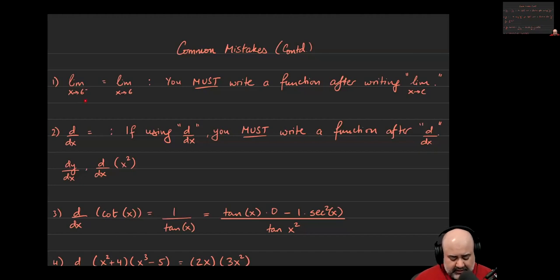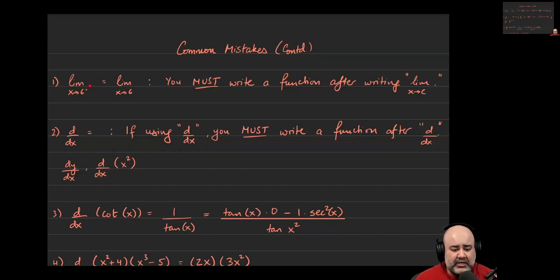So this I think I've addressed in class as well, but students will frequently write — especially when they're showing anything that has to do with continuity — they'll just say the limit from the left and the limit from the right must be the same. And while when you're saying that it makes sense, it doesn't make any sense to write it. So anytime you have a limit notation being used, you have to follow it up with a function.